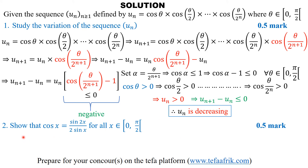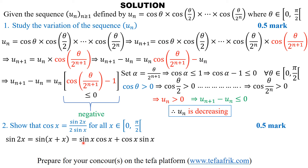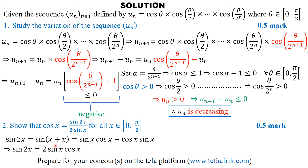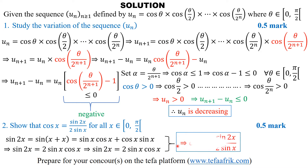The second part asks us to show that for all x in the interval 0 to pi on 2. Let's begin with what sin(2x) is. It equals sin(x+x), and from the compound angle identity, sin(x+x) equals sin(x)cos(x) + cos(x)sin(x), which gives 2sin(x)cos(x). Therefore cos(x) is simply sin(2x) divided by 2sin(x). That's basic trigonometry and the proof is done.